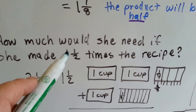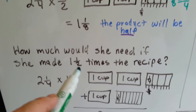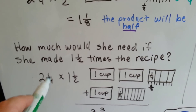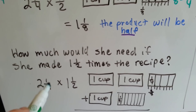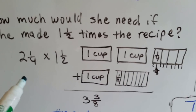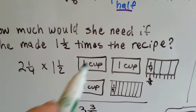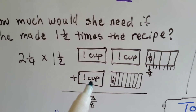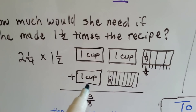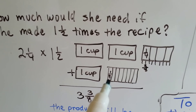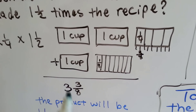How much would she need if she made 1 and 1 half times the recipe? We know what a half is, so if she had 1 and 1 half times the recipe, she'd have the recipe amount plus that half. We'd add these two together — that's a half and that's the 1, so that would be 1 and 1 half. 2 and 1 fourth is what she normally needed, and she needs a half more, so we add another 1 cup and 1 of the little eighths from the fourth. And we get 3 cups, and a fourth and an eighth. A fourth is 2 eighths, so 2 eighths and 1 eighth is 3 eighths.